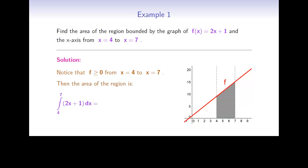So the area is going to be equal to the integral of 2x plus 1 dx from 4 to 7. Using basic anti-differentiation rules, we get x squared plus x from 4 to 7, and after substituting in the values and computing the difference, we get 49 plus 7 minus 16 plus 4, which is equal to 36. So the area of the gray region is 36.